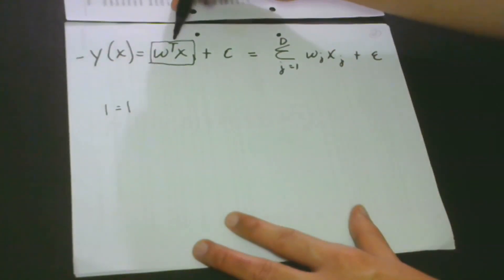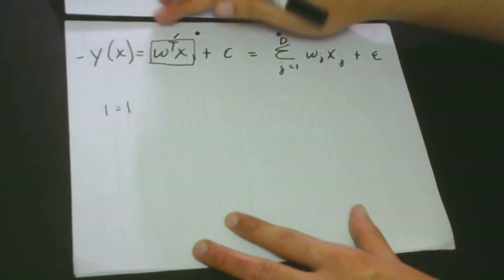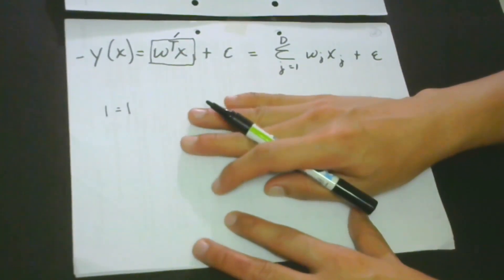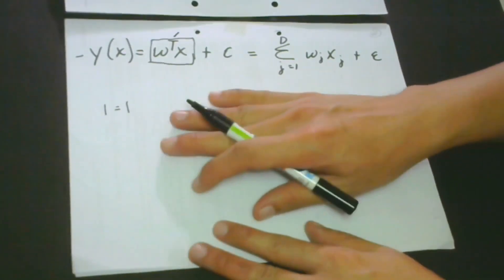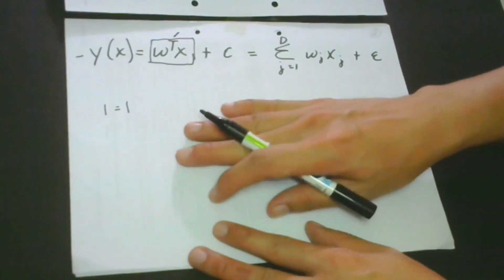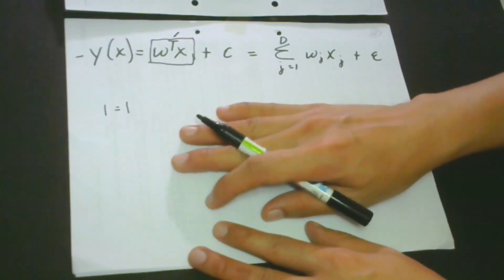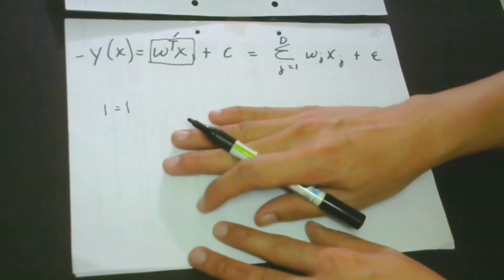So T here actually stands for transpose. So again, we are using here the matrix forms because in the real world, we are not just actually talking about only one input, but we are talking about lots of variables.